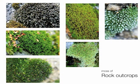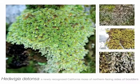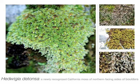Now on our hike, let's say we come upon a rock outcrop. As we move into chaparral and pass an exposed sunny rock outcrop, our first species is Hedwigia detonsa — a quintessential moss found on rock outcrops. It's a newly recognized species, grows on the sides of boulders, and has a grayish color.